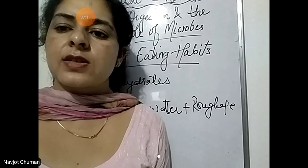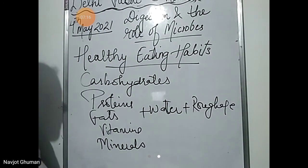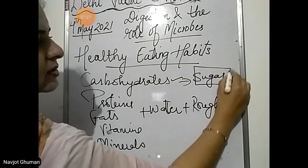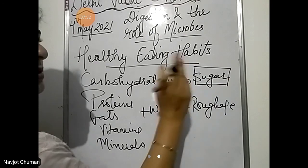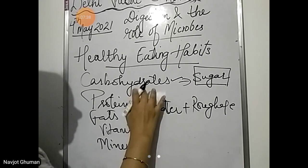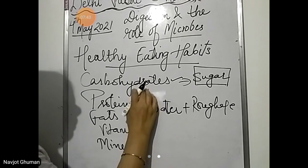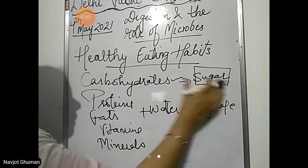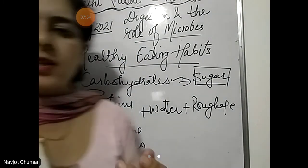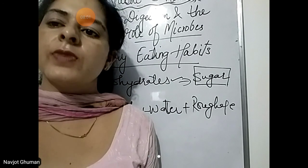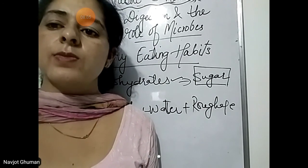It will start tasting sweet because carbohydrates are present in the bread. When you start chewing the bread it begins breaking down into sugar. This shows that digestion starts in the mouth only — bigger molecules begin to break down into smaller molecules right in the mouth. This is the digestion process and this is the effect of digestion.